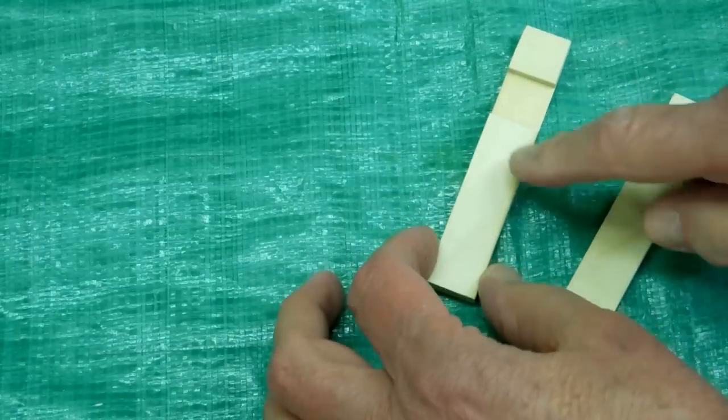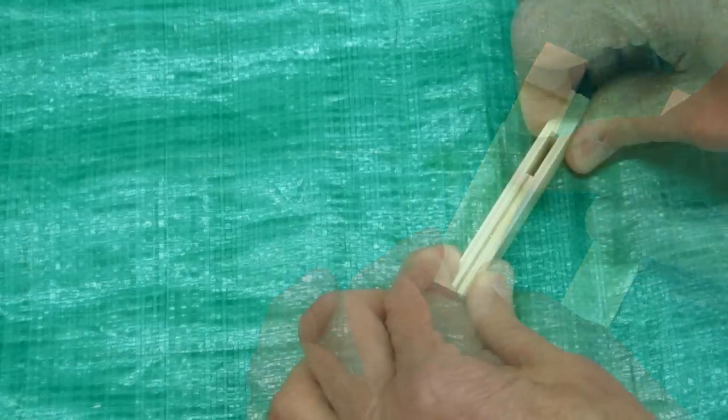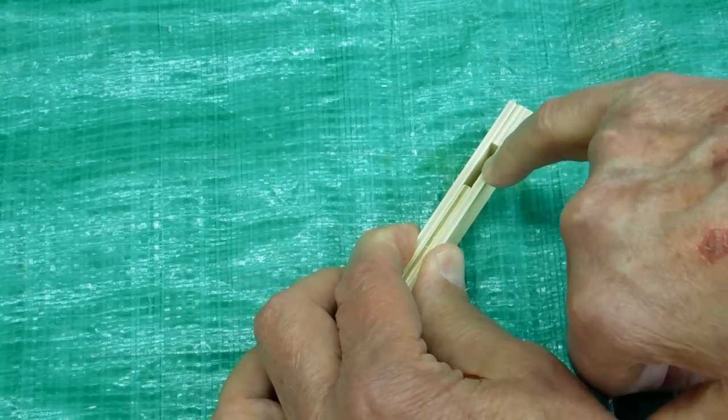When that's dry, put glue on here and here. Keep your glue away from this edge. We don't want any of the squeeze out to go inside here.